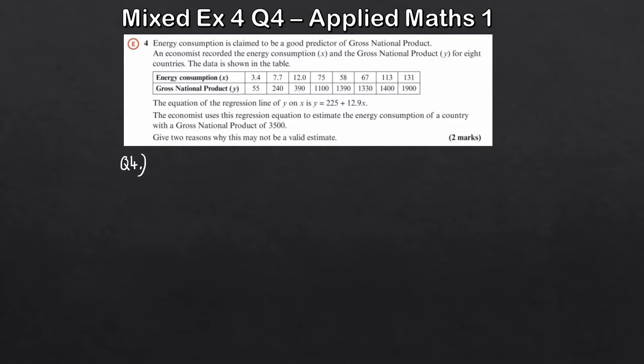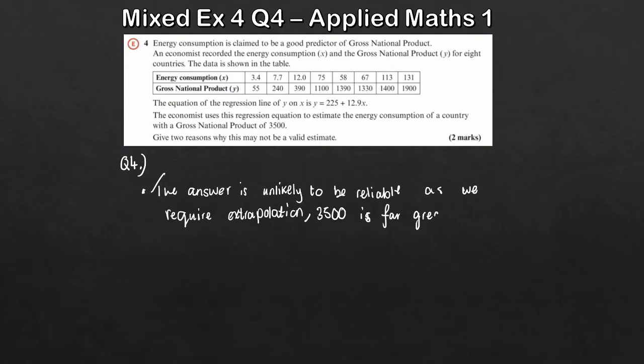So the first thing we can comment on is the fact that the value that we've been given is way past the set of the data. So in other words, we're going to have to use extrapolation. But because of that, the answer is unlikely to be reliable because we are extrapolating. So we make our first comment. The answer is unlikely to be reliable as we require extrapolation. 3,500 is far greater than the limit of the data set.